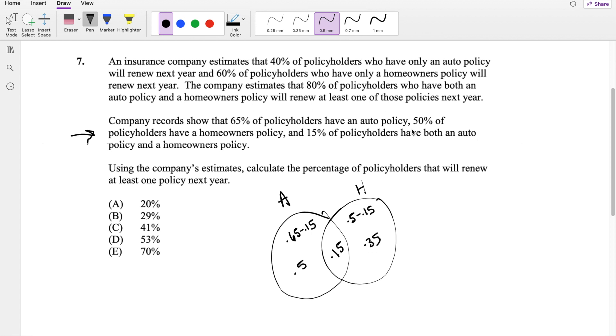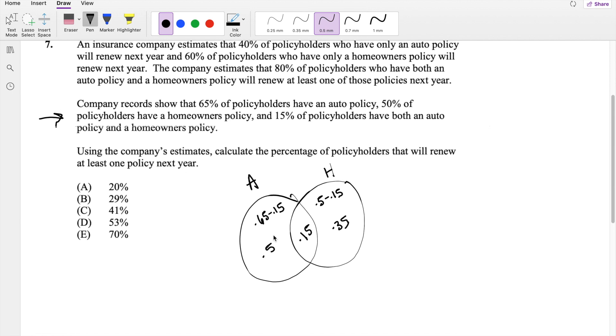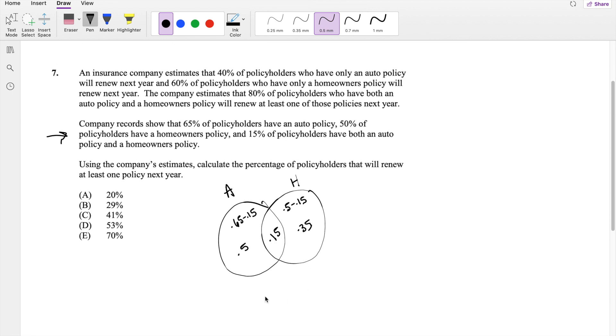Right, and then later in the first paragraph, they tell you of the people who only have auto insurance, 40% will renew. So that's talking about 40% of 50% will renew, which is equal to 0.2.